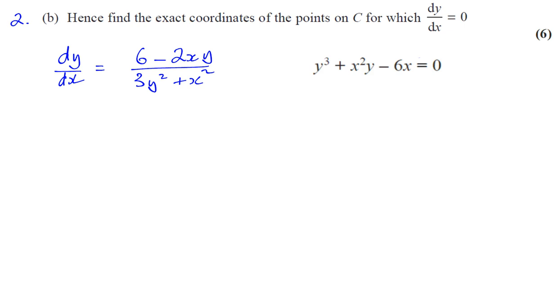For question 2 part b, we've already differentiated the function and got this as our gradient function: dy/dx equals (6 minus 2xy) over (3y squared plus x squared). We're asked to find the exact coordinates of the points on C for which dy/dx equals 0.